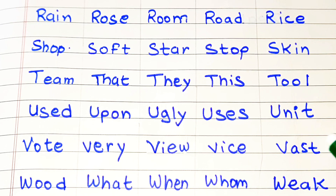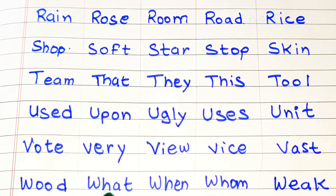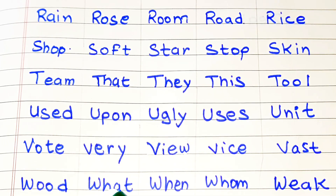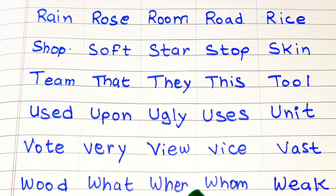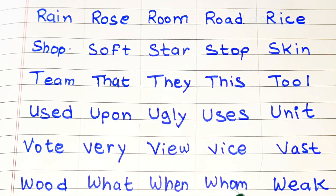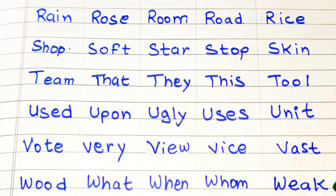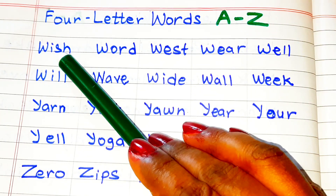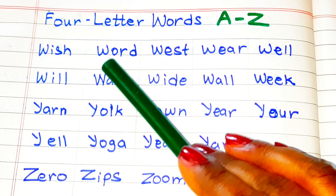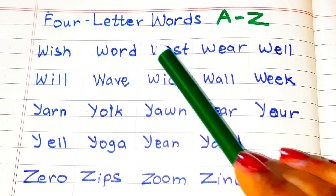W: Vast, Wood, What, When, Whom, Weak, Wish, Word.